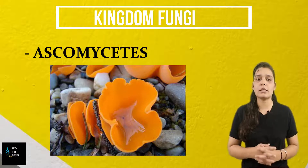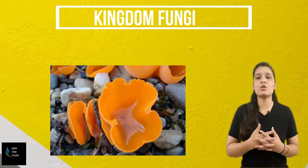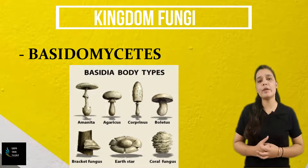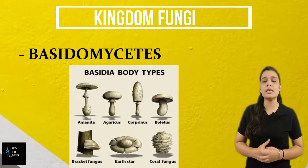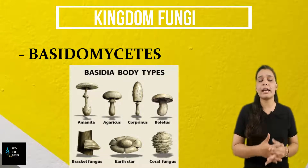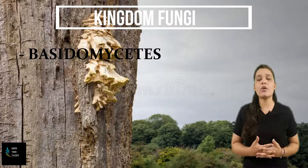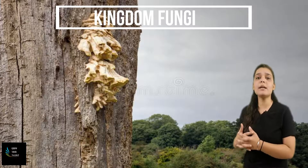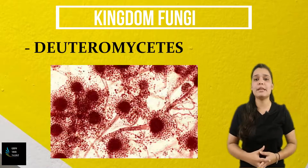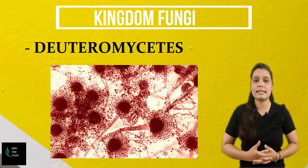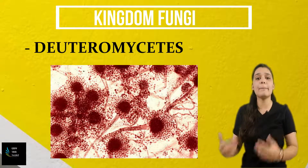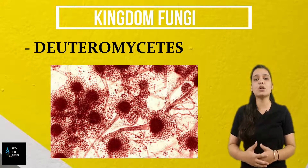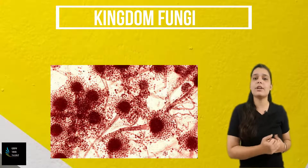The third type is Basidiomycetes, and a very common form of this is mushrooms and bracket fungi. They live on trees, logs, and living plant bodies. The fourth type is Deuteromycetes, and these are known as the imperfect fungi because they do not follow the life cycle of regular fungi.